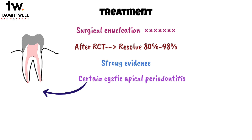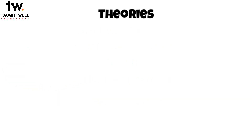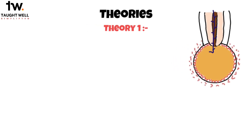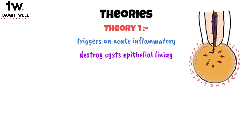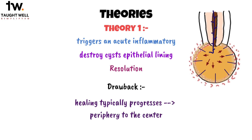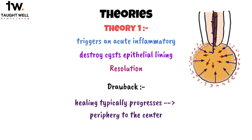However, the exact mechanism behind this healing remains unclear, and various theories have been put forth. One theory suggests that when an endodontic instrument is introduced into the cystic area, it triggers an acute inflammatory response that might destroy the cyst's epithelial lining, leading to resolution. However, this idea is challenged because healing typically progresses from the periphery to the center of the lesion.